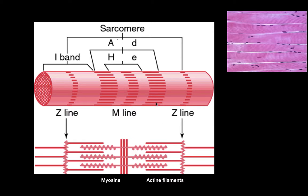To understand how a muscle works, you need to understand how actin and myosin work together. We have structures called Z-discs, and then actin filaments — shown in red in this diagram — with myosin attached in the middle. When ATP and calcium are present, the myosin grabs onto actin and pulls the actin filaments together, pulling the Z-discs closer — that is contraction. When we relax the muscle, everything slides back to the starting position.